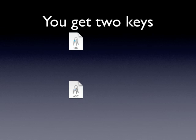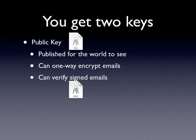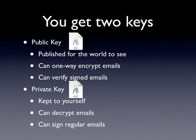The way public key encryption works is that you get two keys. One is a public key and one is a private key. The public key is published for the world to see — it's a key you can give out to whoever you want. You can use it to one-way encrypt emails and verify signed emails. You can put it online, on your Facebook page, or publish it in a directory, and a lot of people do that. The private key you keep for yourself. You don't give this copy out — this is your copy and you must keep it safe and secure on your computer. It can be used to decrypt emails and you can also sign regular emails to prove that they're from you.